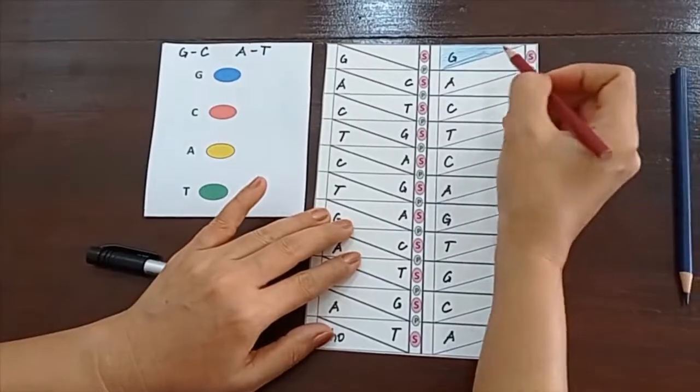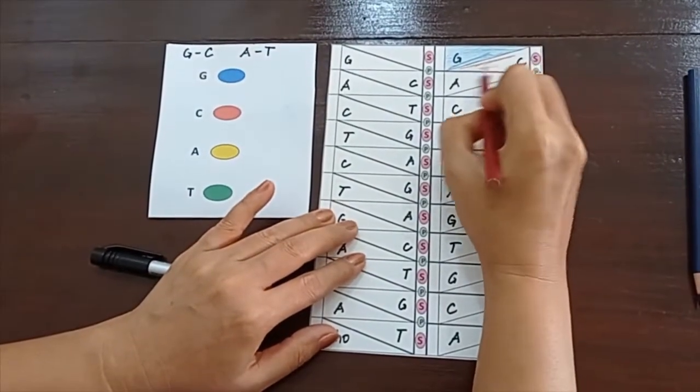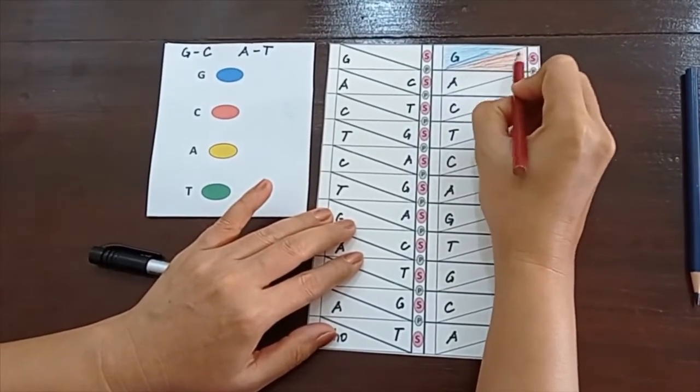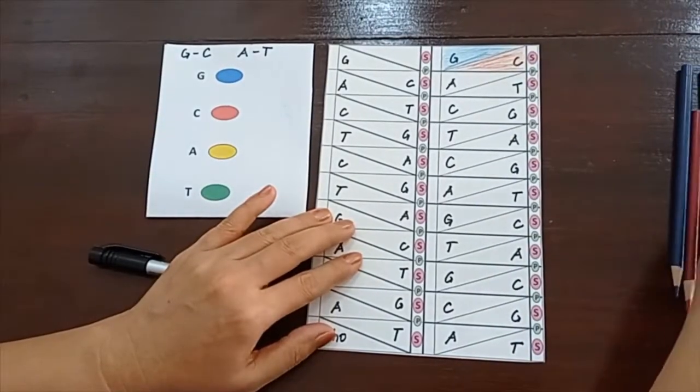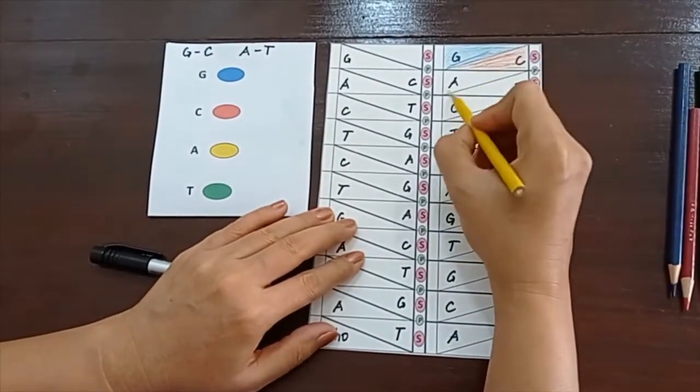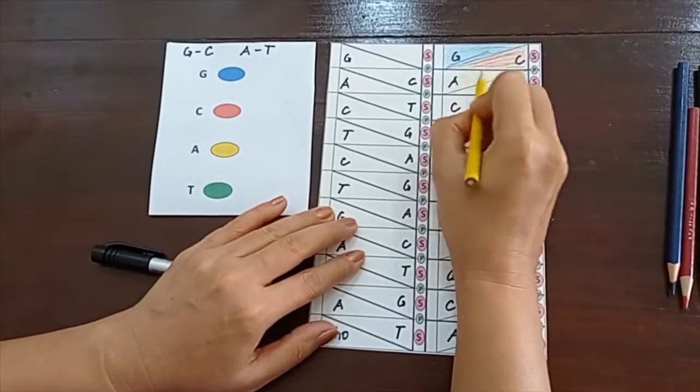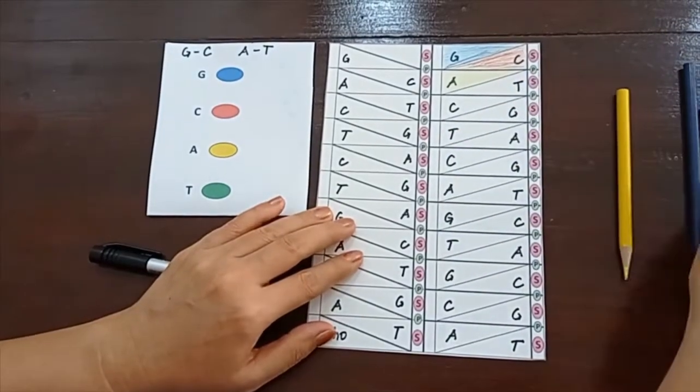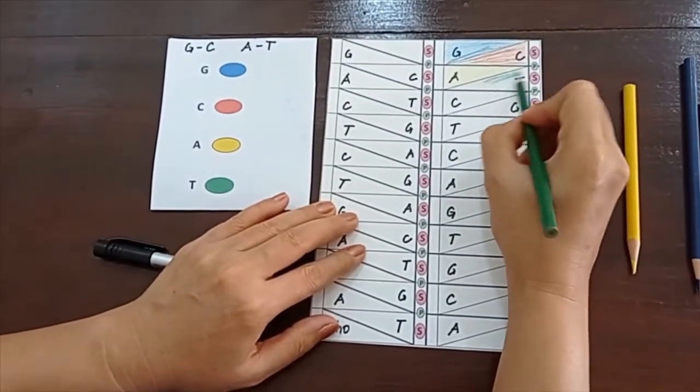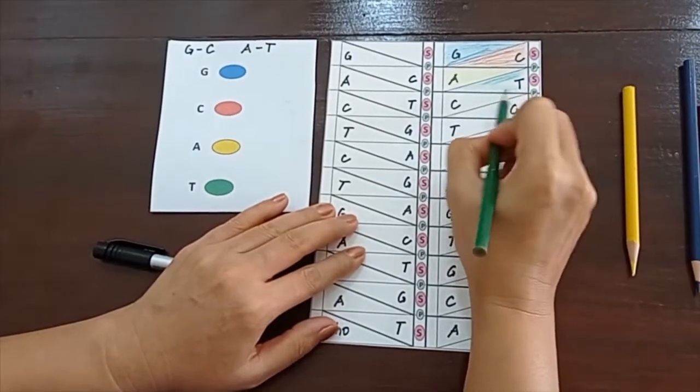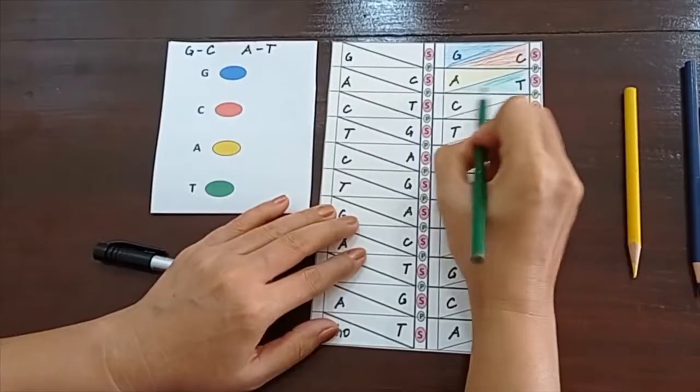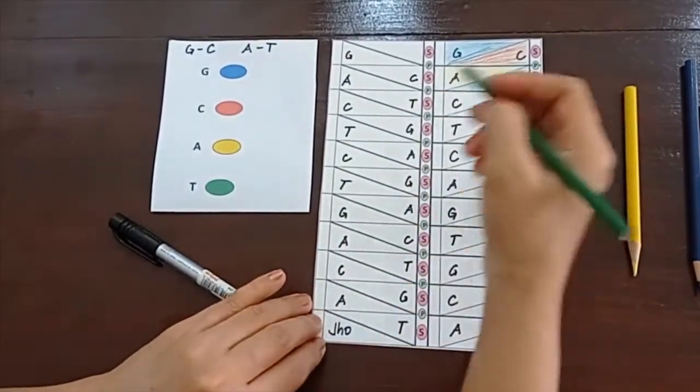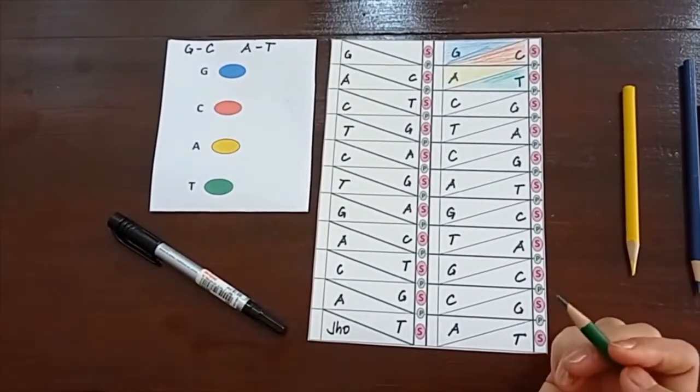And then here, I have a C, so I will color red. Here is an A, so I will color it yellow. And my T, here green. And I will do this until I color all the triangles that I have in this template.